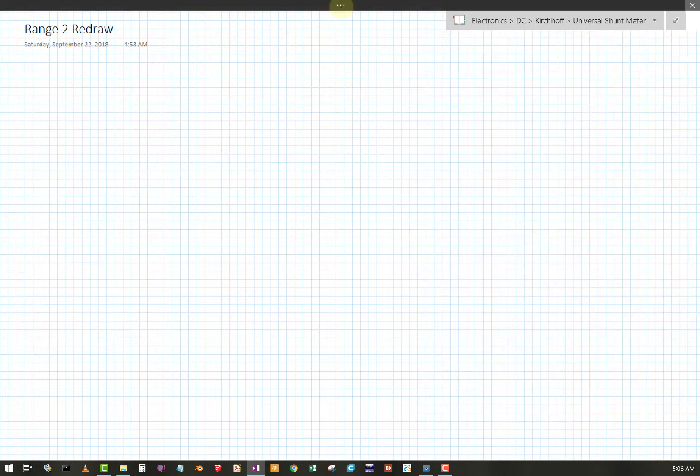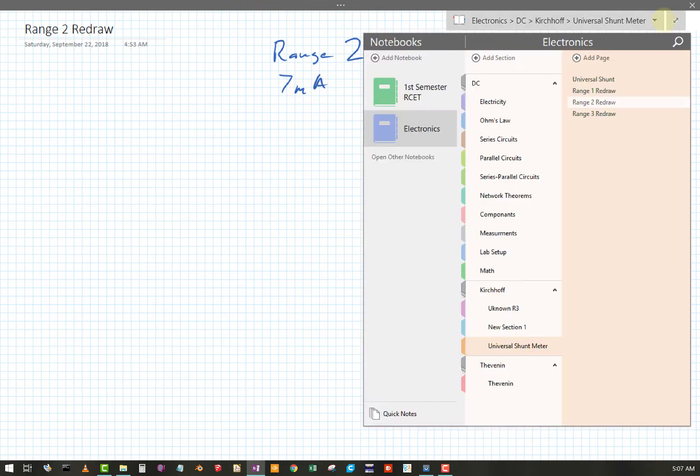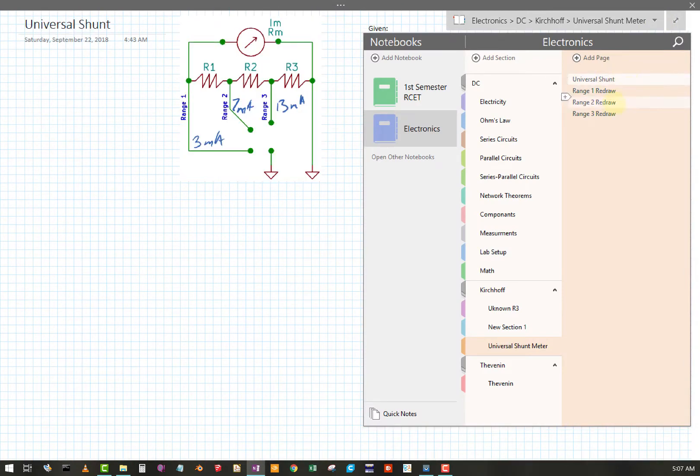Okay, so range two. Come back in here with some blue. Okay, range two. That was seven milliamps, I believe. Let's make sure. Yep, seven milliamps.